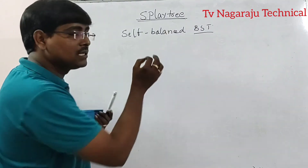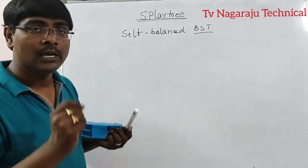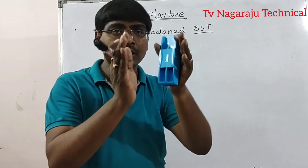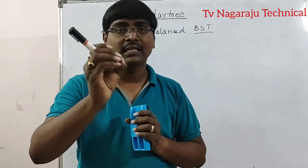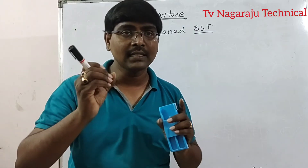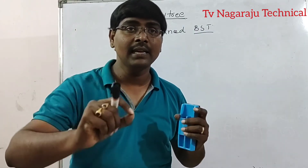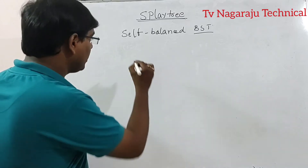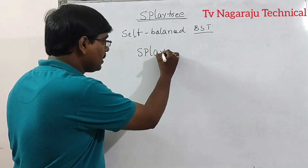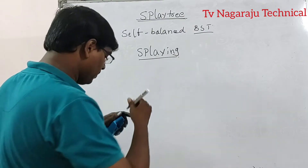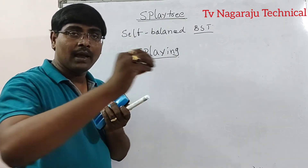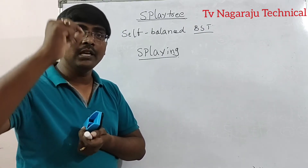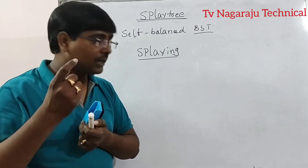Obviously, what is the question? How is the balancing performed? Simply, whenever we are accessing an element, that element is placed at the root of the tree — that is the balancing condition. That operation is called the Splaying operation. Within the tree, if I am accessing one particular element, immediately that element is moved to the root of the tree.